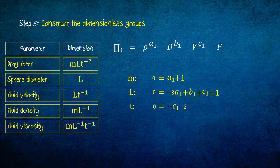These equations can be easily solved. Giving a1 equals minus 1, c1 equals minus 2, and b1 equals minus 2.